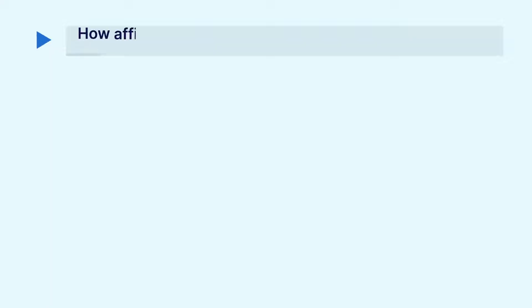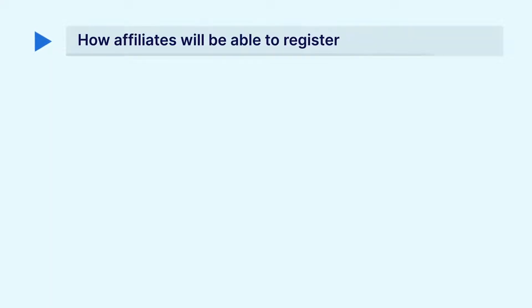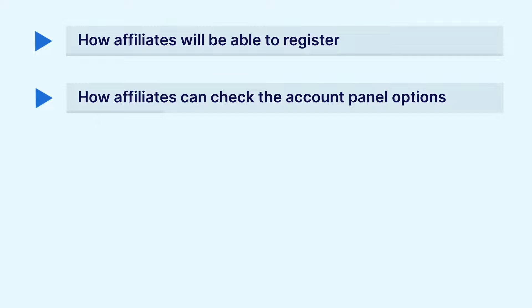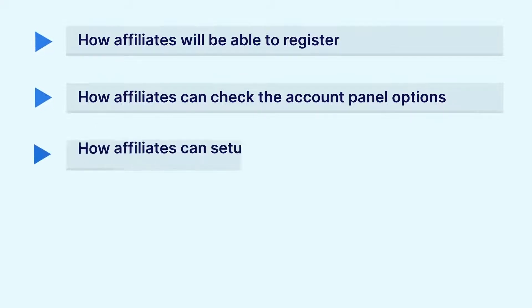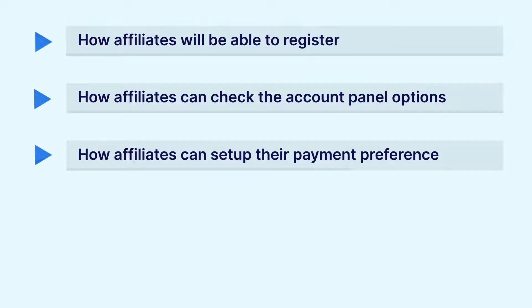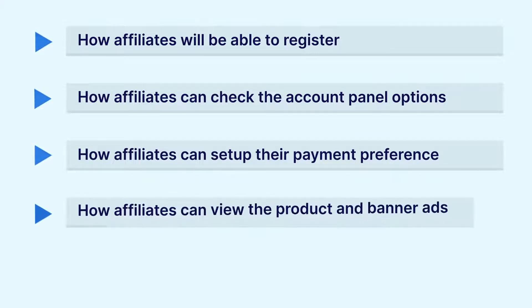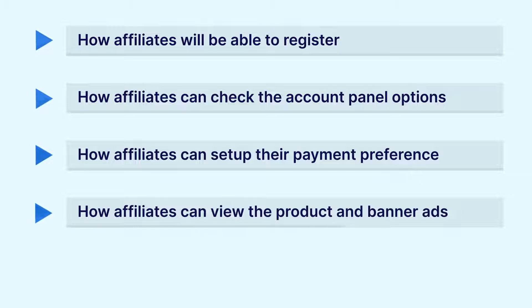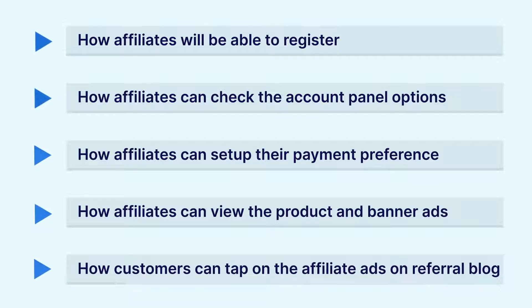In today's video tutorial for the Bagisto Laravel affiliate system, we'll be checking out the workflow at the affiliates end — how affiliates can register on the web store, see the different account panel options within the affiliate system, set up their payment preference, work with product and banner ads, and post them on their blog URL.